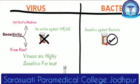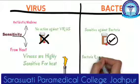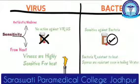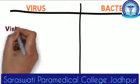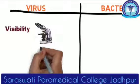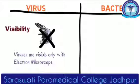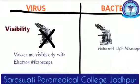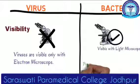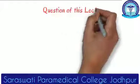Bacteria can be cultured in routine media such as blood agar, chocolate agar, or other nutrient agar media. Regarding sensitivity: antibiotics act on cell membranes or enzymes present on bacteria, while viruses do not contain any cell membrane or enzyme, so there is no action of antibiotics against viruses. Viruses are highly sensitive to heat and get inactivated within a minute at 37 degrees Celsius, while bacteria are resistant to heat — some bacterial spores are even resistant to boiling water. Viruses are generally not seen with the ordinary light microscope and are observed only with the electron microscope, while bacteria are visible with the light microscope.